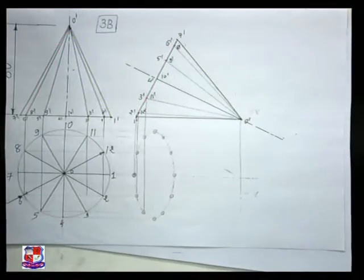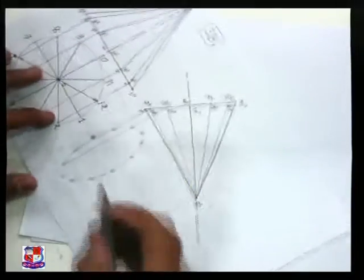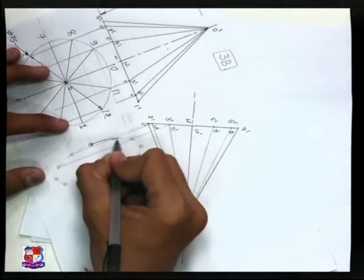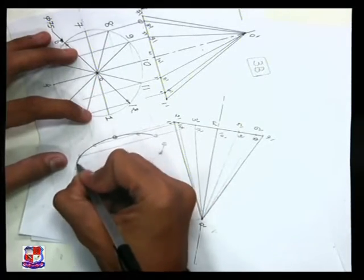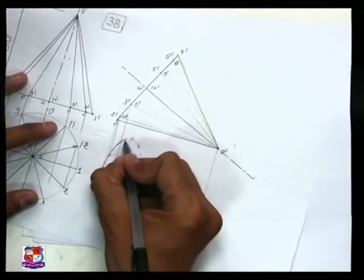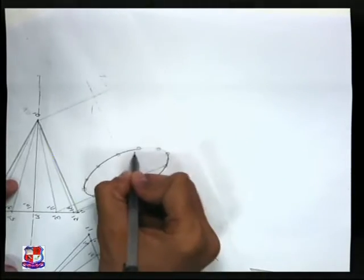12 points should be there by taking projections from each point and join all these points with a smooth curve because it will appear as an ellipse. This base is circular and it is inclined, so it will appear as an ellipse like this. Join all these points with a smooth curve.